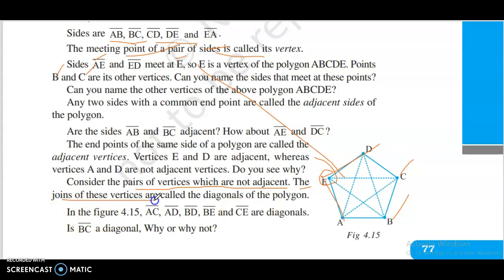For pairs of vertices which are not adjacent, the joints of these vertices are called the diagonals of the polygon. In figure 4.15, AC, AD, BD, BE, and CE are diagonals.